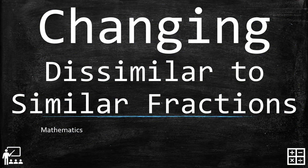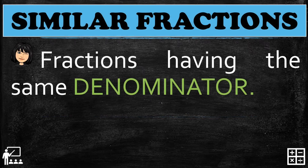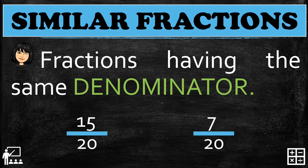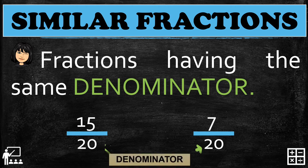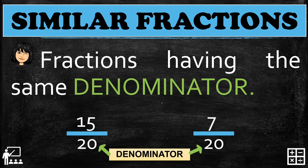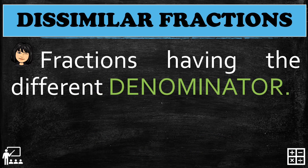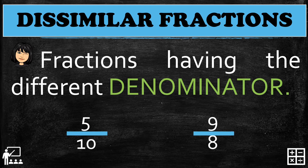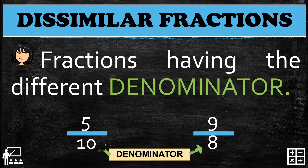This video lesson is about changing dissimilar to similar fractions. Similar fractions are fractions having the same denominator, just like 15 over 20 and 7 over 20 — their denominator is the same. While dissimilar fractions are fractions having different denominators, just like 5 over 10 and 9 over 8 — their denominators are different, or not the same.